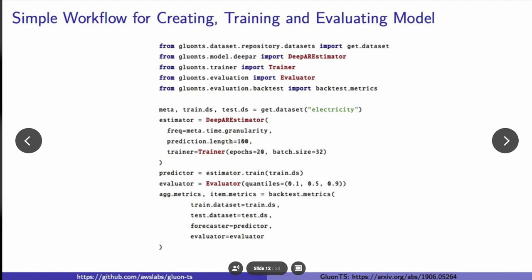Once we have our estimator, we can call the train method, since that's defined for every estimator, and get our predictor. With the predictor here, we're going to compute the backtest metrics. In particular, you'll see we're computing the P10, P50, and P90 quantile loss here. The output of backtest_metrics gives you the aggregate metrics over all your items, as well as the item level metrics.